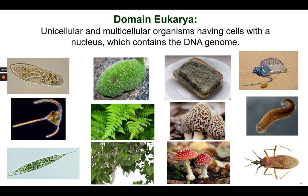Finally, the domain Eukarya is the largest domain. The cells have a nucleus. They can be single-celled, like paramecium, dinoflagellates, and euglena — all single-celled protists that are Eukarya because their cells have a nucleus. They can also be plants, fungi, or animals. No matter how simple the animal is, it is a eukaryote because its cells have a nucleus.